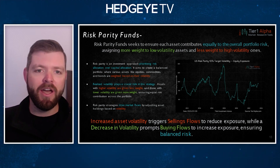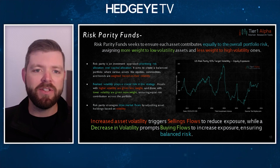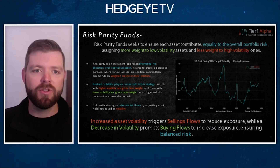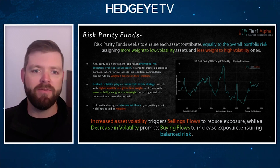Volatility, as it increases, drives selling flows. And as volatility decreases, it drives buying flows. Of course, this is all driven by volatility from the options market, from dealer gamma hedging flows. Lower volatility creates buying; higher volatility creates selling.